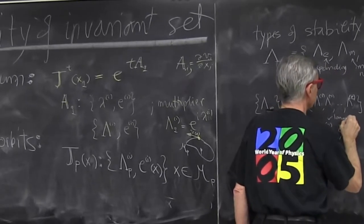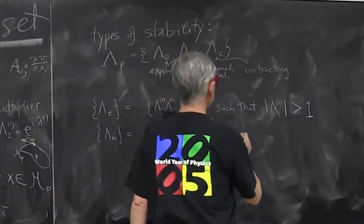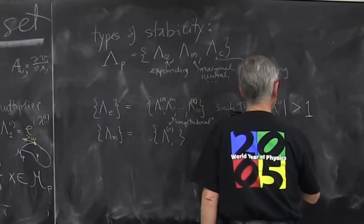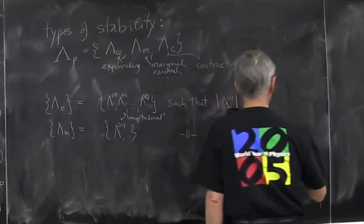I'll call it longitudinal. It means it's parallel to the flow. Such that anybody in this set has magnitude strictly one, and it can be complex.